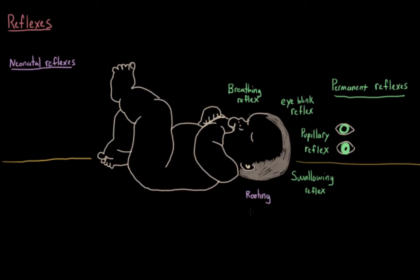We have the rooting reflex, which describes how if you stroke a baby's cheek, they will involuntarily turn their face towards that stimulus. And this helps the infant to orient towards the mother's breast or a bottle. And this actually disappears over the first few weeks of life, and eventually the baby turns its head voluntarily.